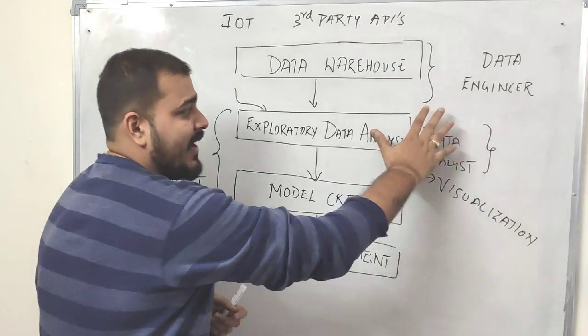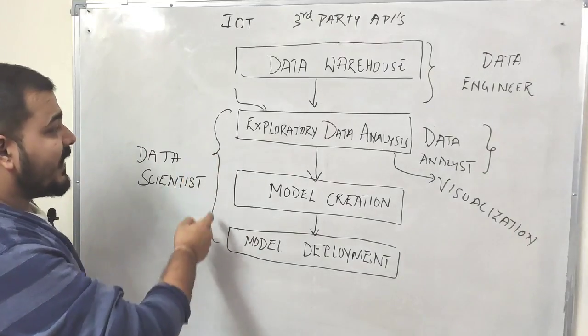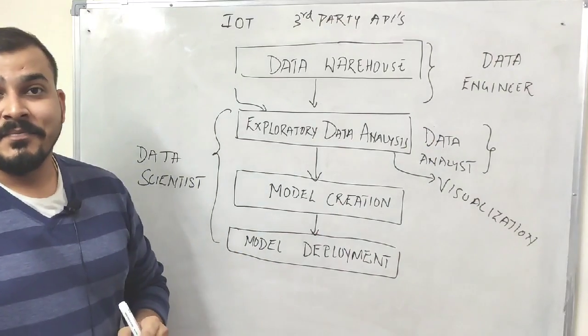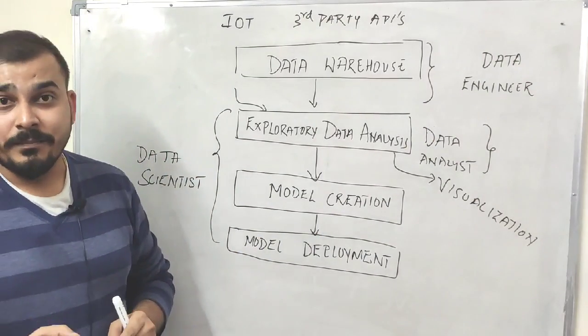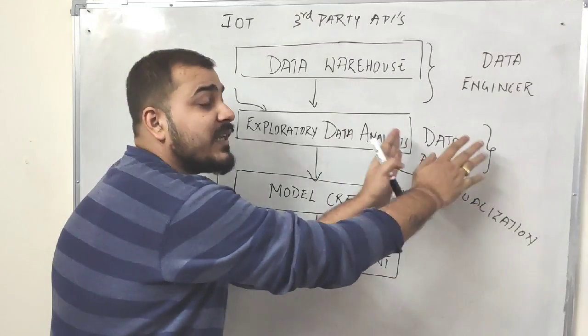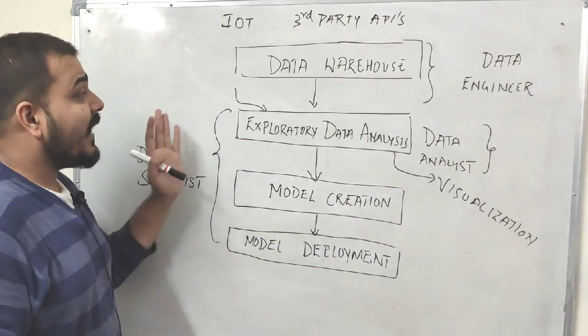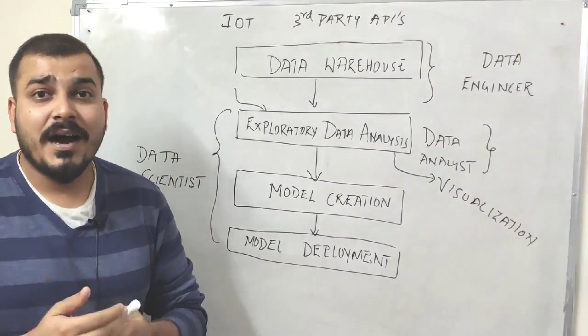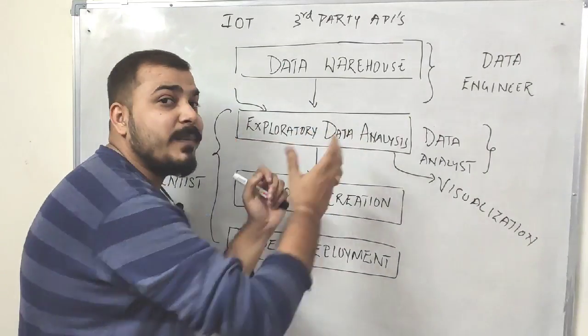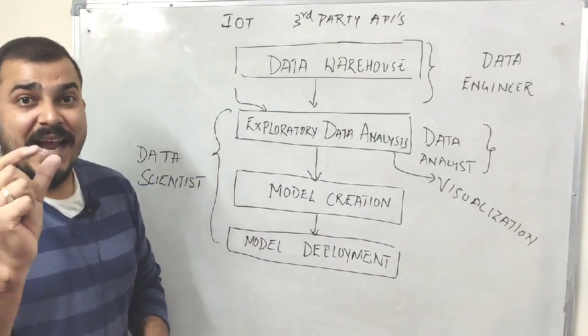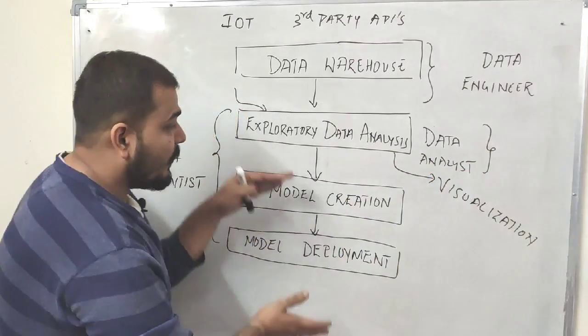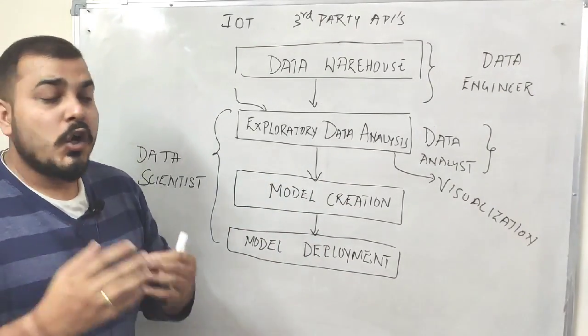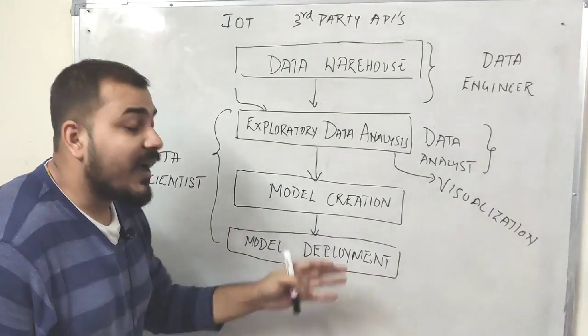When the data analyst is working, there is also a role called data scientist. This data scientist can also do the same role as the data analyst. Nowadays, data scientist is the highest paid job. Data scientists can perform exploratory data analysis because they know programming languages like Python and R. The exact difference between a data scientist and data analyst comes in two sections: a data analyst will not know how to create a model, deploy a model, or optimize a model.